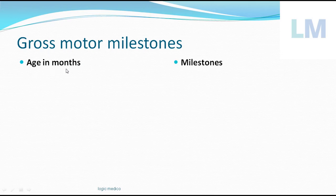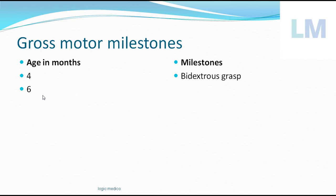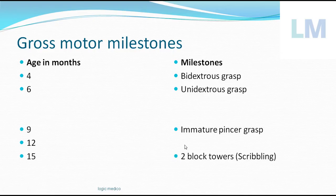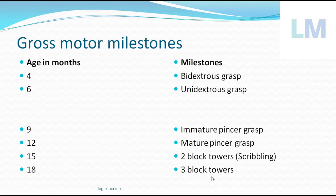Looking at fine motor milestones by age in months: at 4 months, the child achieves bidextrous grasp; at 6 months, unidextrous grasp; at 9 months, immature pincer grasp; at 12 months, mature pincer grasp; at 15 months, the child can build a 2-block tower and do scribbling; at 18 months, a 3-block tower.